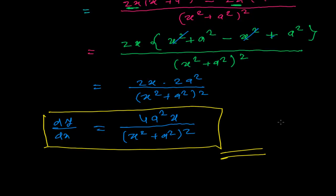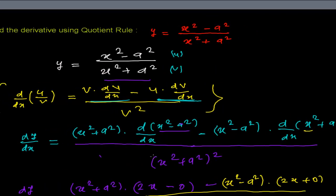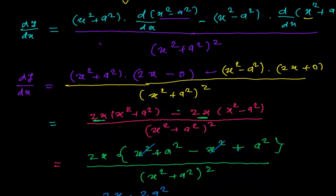We are finished! This is the derivative of the given function y equals (x squared minus a squared) over (x squared plus a squared). I hope you understand each and every step. If there is anything confusing, please comment below and I will try to explain. We'll meet in the next video with a more different application of the quotient rule to find derivatives. Bye bye!